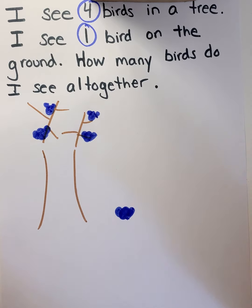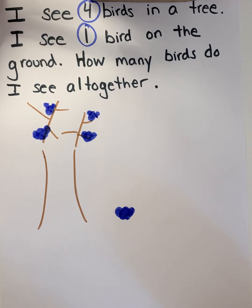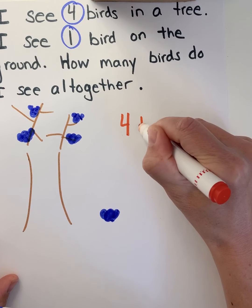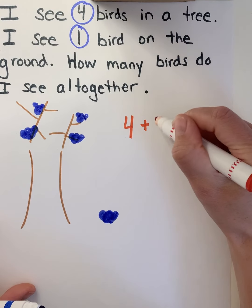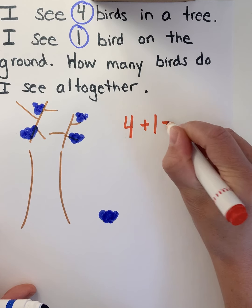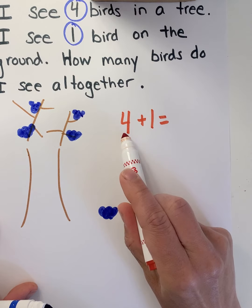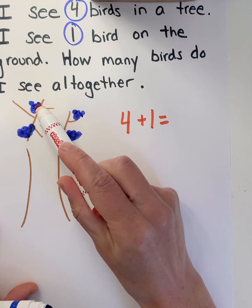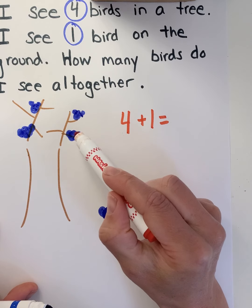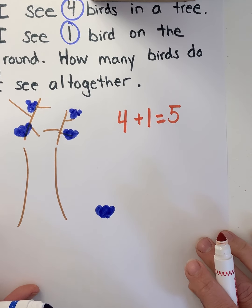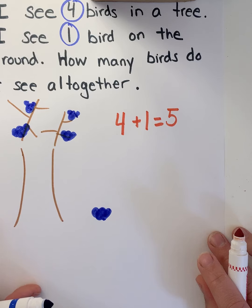Now I'm going to write a number sentence to match my picture. How many birds are in the tree? Four. How many birds are on the ground? One. And how many birds do I have all together? Let's count — four plus one — one, two, three, four, five. So four plus one makes five.